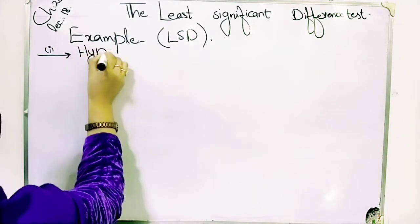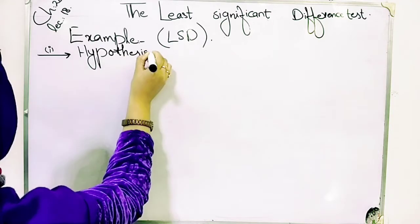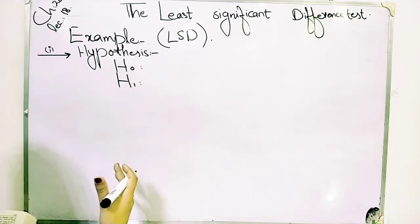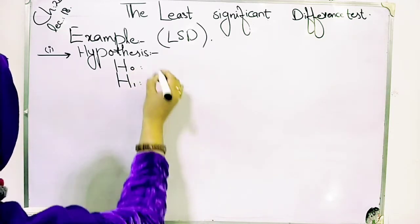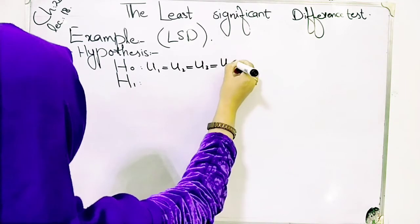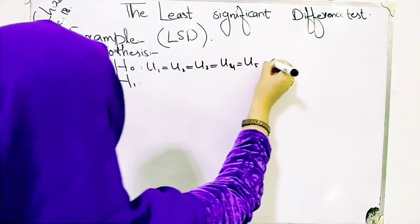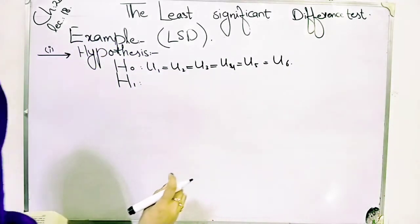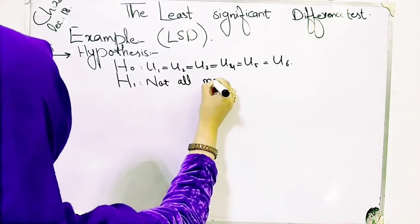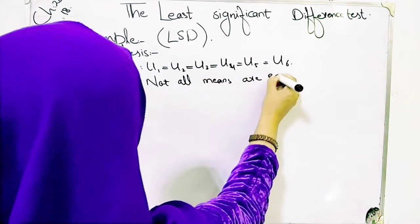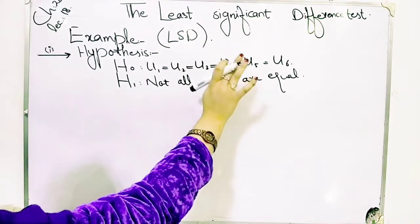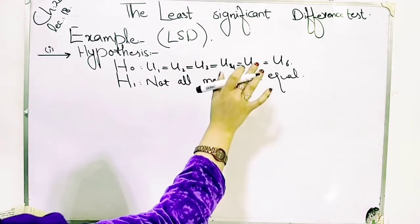Hypothesis comes to us — we have two types: the null hypothesis and the alternative hypothesis. The null hypothesis says that all six treatment means are equal: mu1 = mu2 = mu3 = mu4 = mu5 = mu6. The alternative hypothesis says that not all means are equal. When the null hypothesis is given, we say all six means are equal, but in the alternative, not all means are equal.